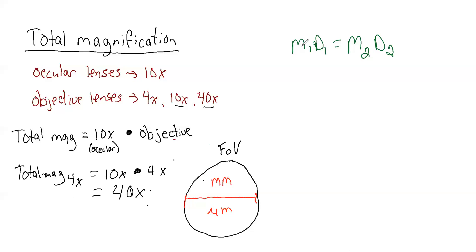What we're going to do is measure at 10x and use that measurement to calculate the others — which is the purpose of this video. In your lab book, you will see a large equation that is basically an expanded version of a proportion equation: M1 times D1 equals M2 times D2. We'll use M for magnification and D for diameter.